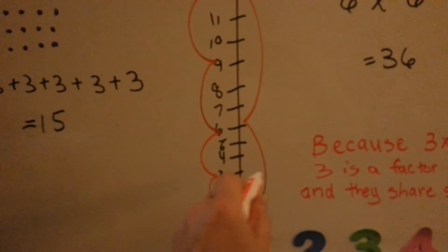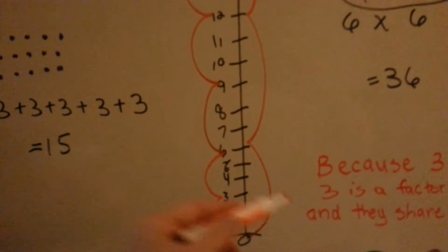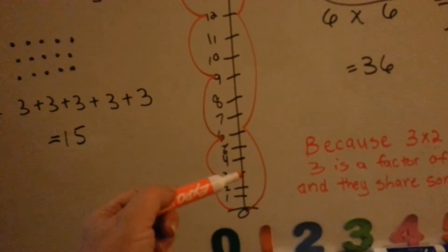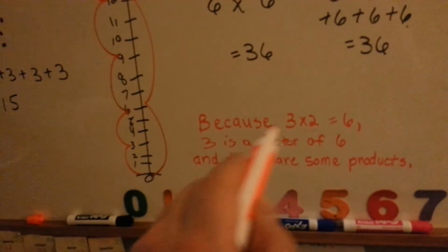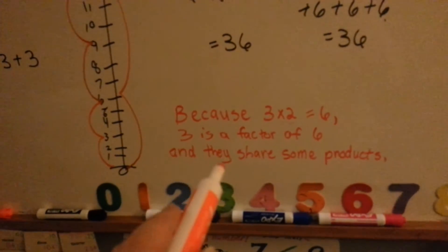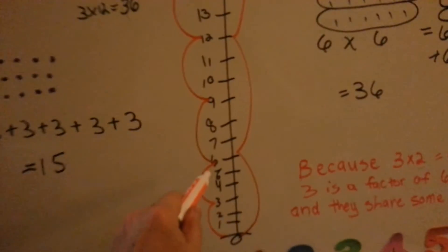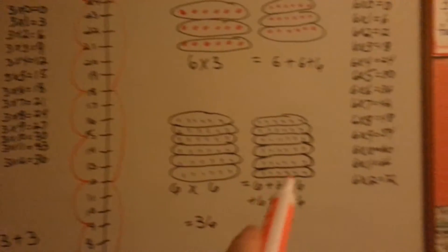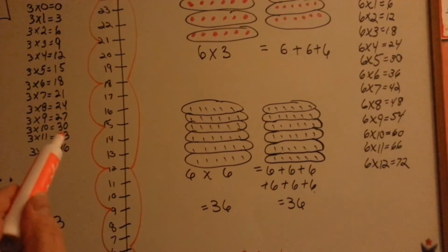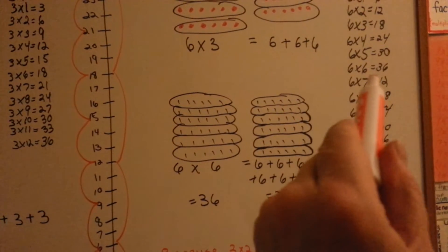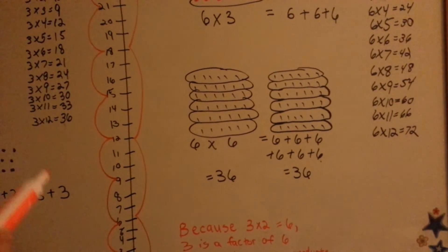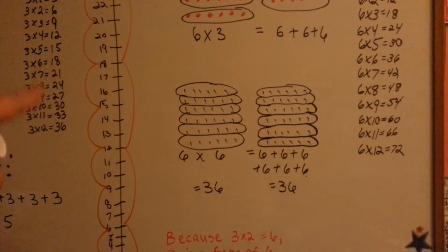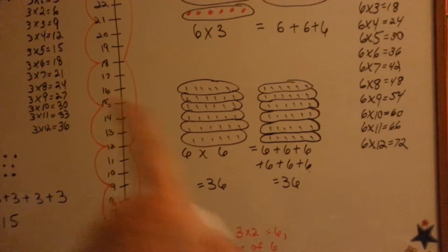Do you see how the 3 is right in the middle of the 6 answer? It's like it cuts it right in half, and that's because 3 and 3 makes 6 — so it's right in the middle. Because 3 times 2 equals 6, 3 is a factor of 6. They share some of the same products: they share the 6, the 12, the 18, the 24, the 30, and even the 36. And if you kept going — 3 times 13, 3 times 14, 3 times 15 — you would find more that they share. Those are called common factors when you can multiply them and they share them.